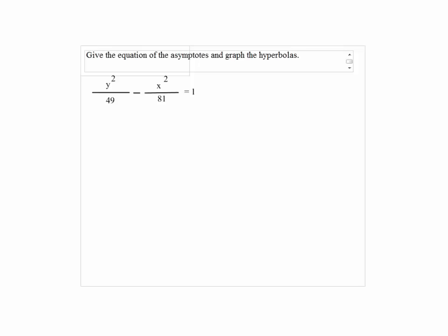Give the equation of the asymptotes and graph the hyperbola. Y squared over 49 minus x squared over 81 equals 1.